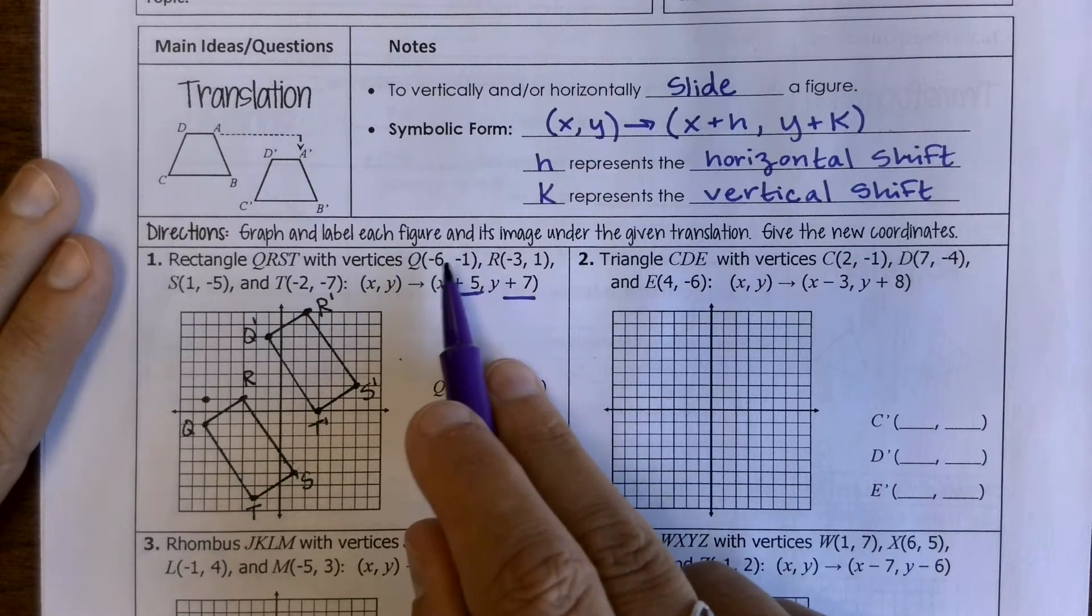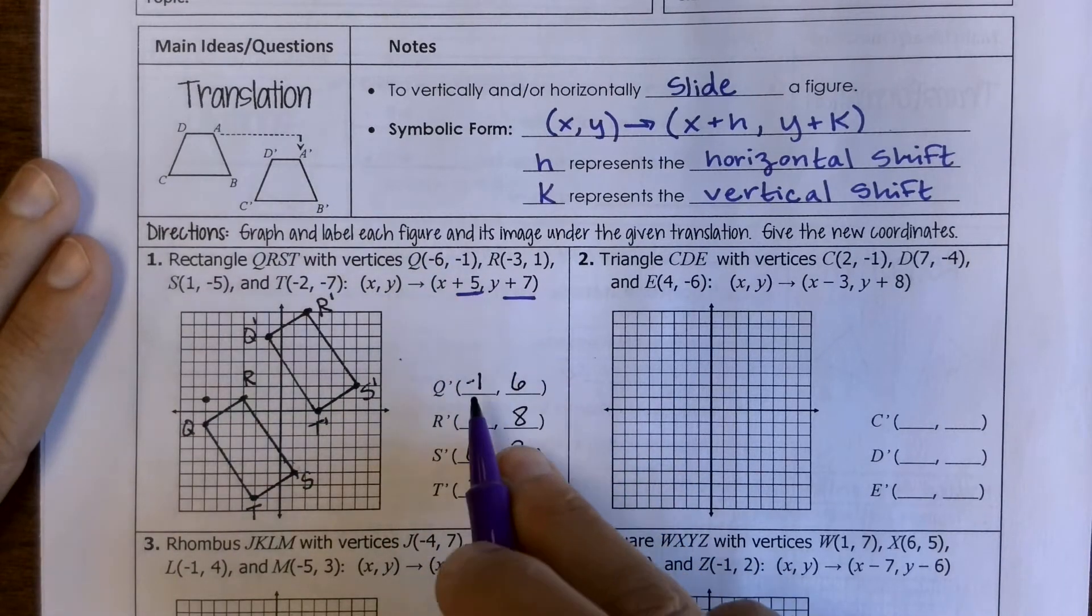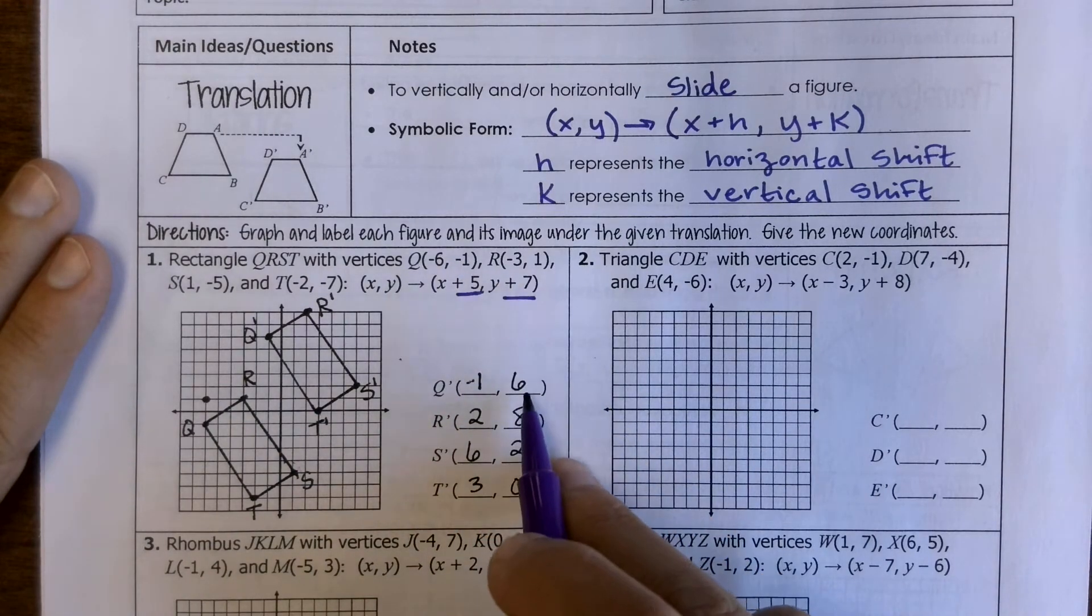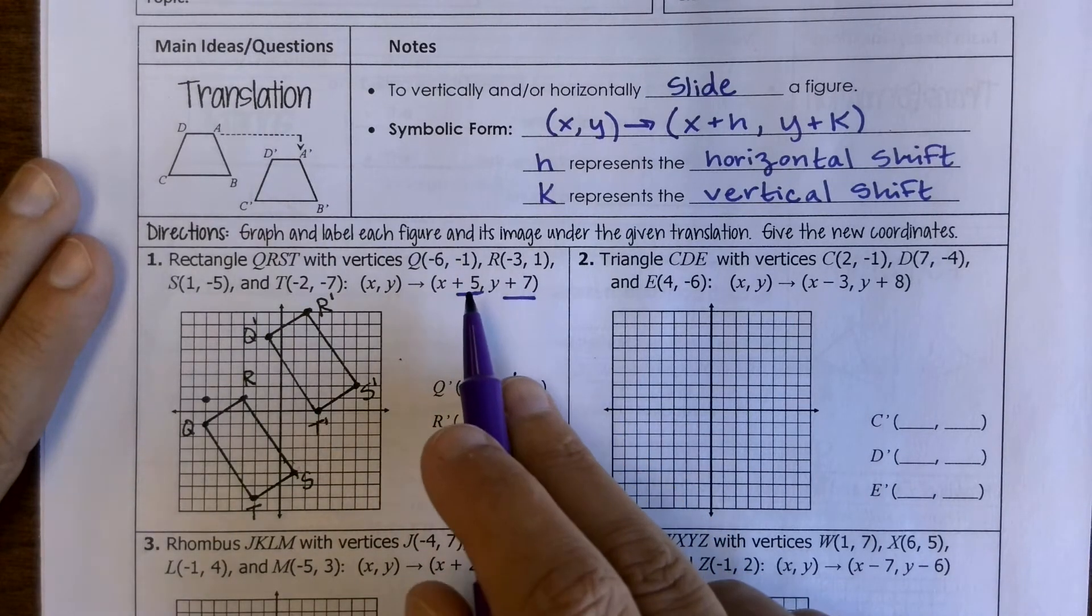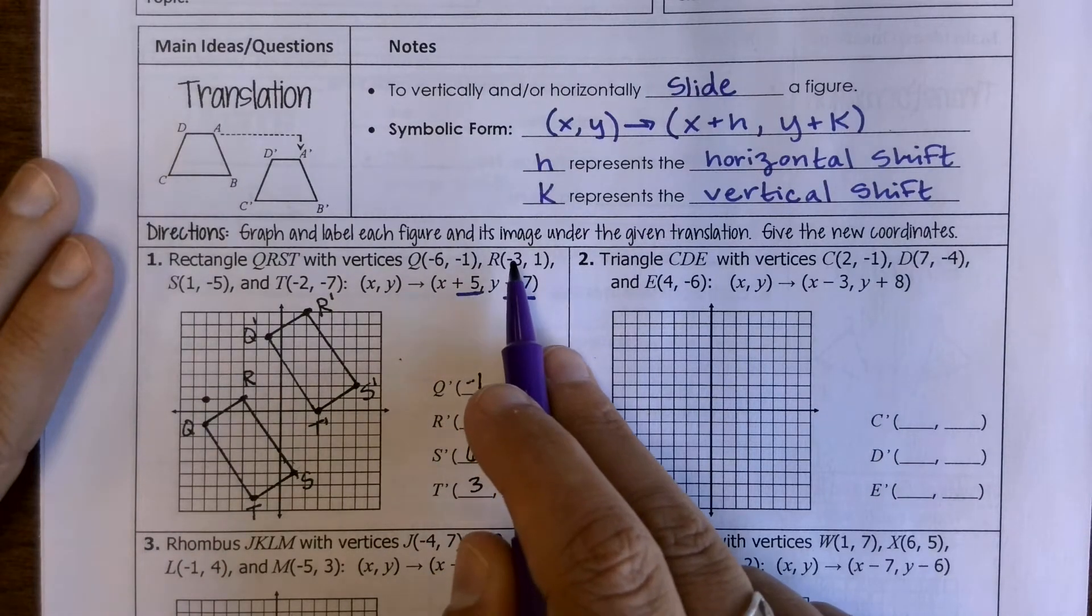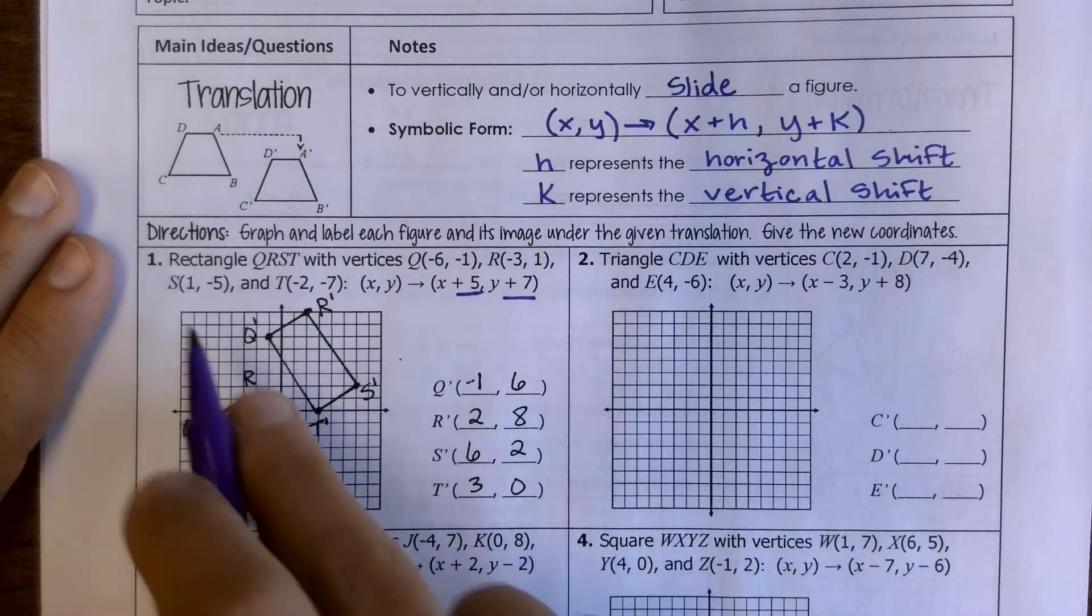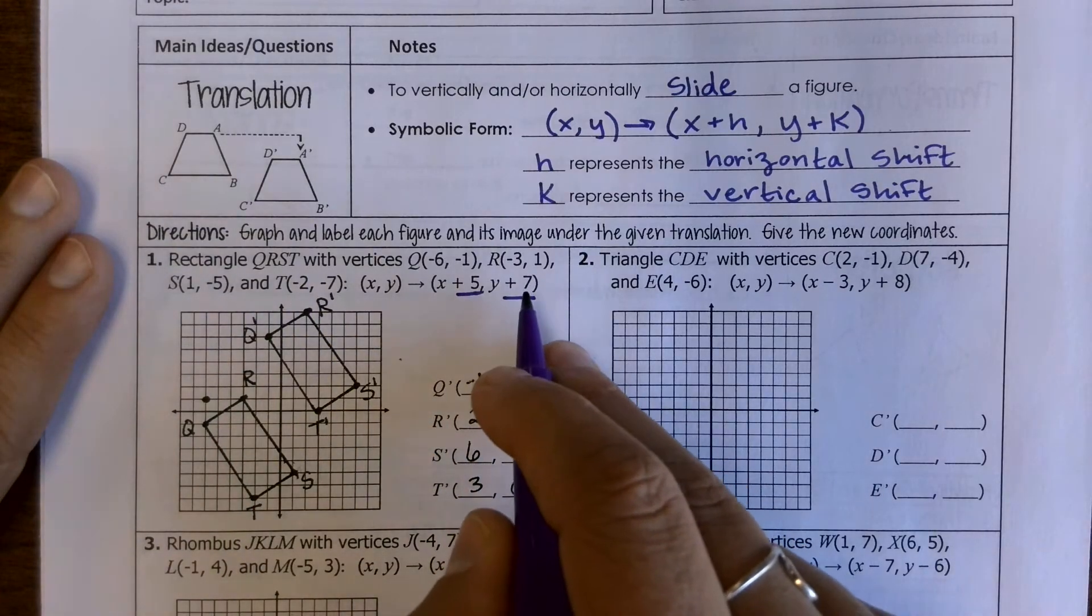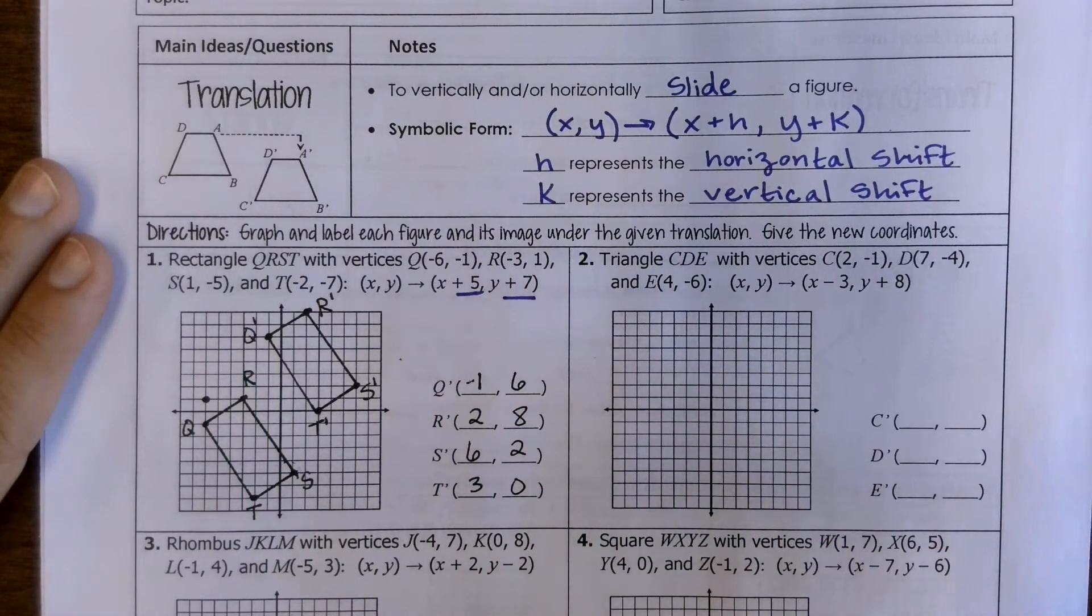So with a q, negative 6 plus 5 gives us our negative 1, negative 1 plus 7 gives us our negative 6 and so on. So we could just add 5 to each of our x values, add 5 to 1 to get 6, add 5 to negative 2 to get 3, and then add 7 to all of our y's.